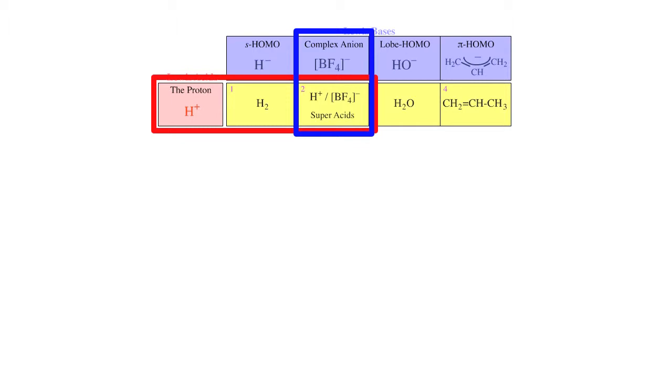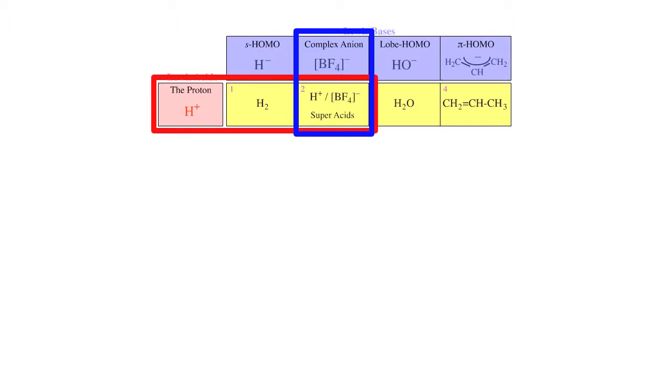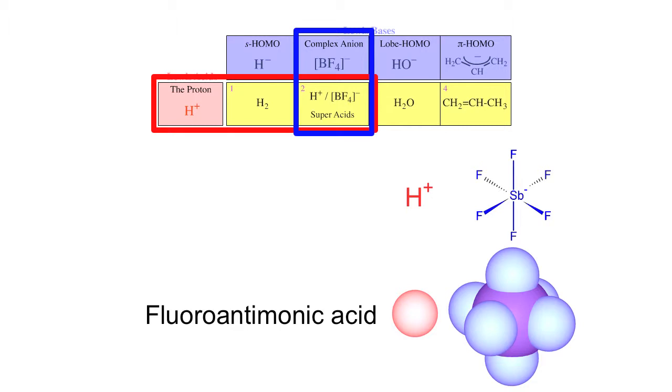If we look at the interactions of the proton with extremely stable complex anion bases such as the hexafluoroantimonate ion, we get George Olah type super acids, fluoroantimonate acid. This is actually made by reacting pentafluoroantimony with hydrogen fluoride.